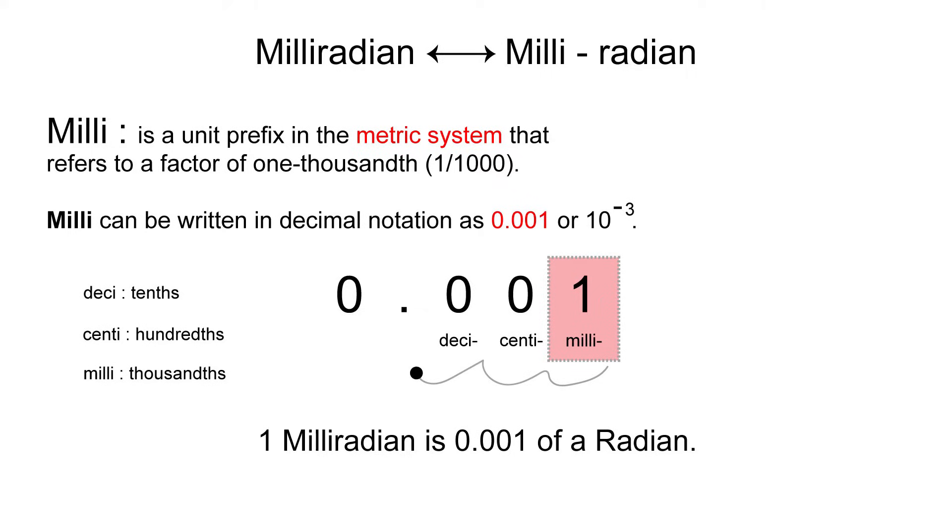So one milliradian is 0.001 or one thousandth of a radian as we discussed earlier. And remember, one mil is always one mil, meaning that one milliradian is always one milliradian. So when we get into the calculations further, when we're calculating our distance using the mil dot system on the rifle scope on the reticle, remember one mil is 0.001 and it never changes. So when people refer to a mil, a mil is a mil.